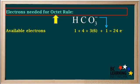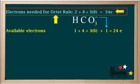The next thing we need to calculate is the total number of electrons needed to satisfy the octet rule. Hydrogen needs two electrons to achieve the noble gas stability of helium. Carbon needs eight electrons for a stable octet, and three oxygen atoms need three times eight, or 24 electrons to give them stable octets. So the total number of electrons needed is 2 plus 8 plus 24, which equals 34 electrons.